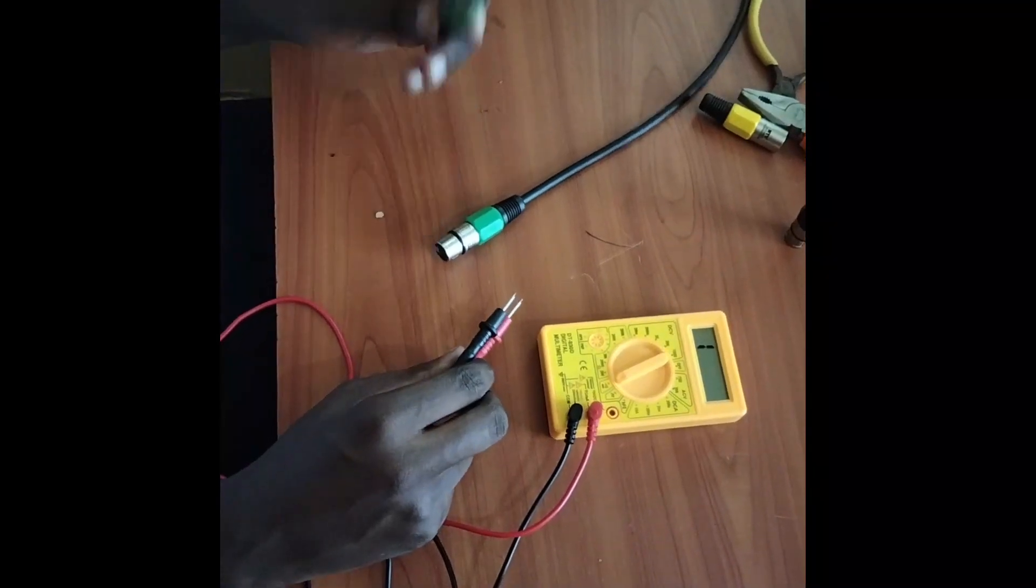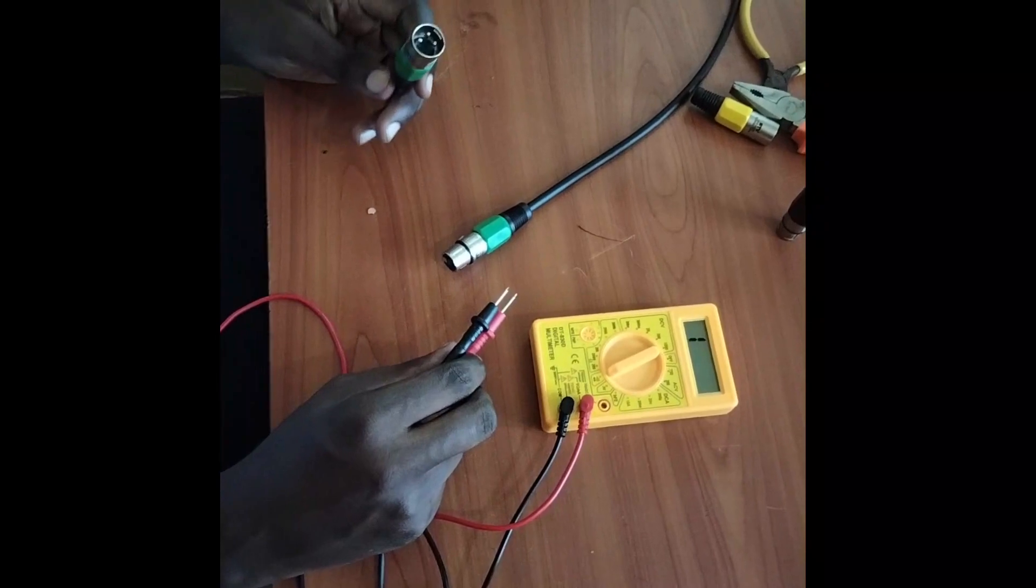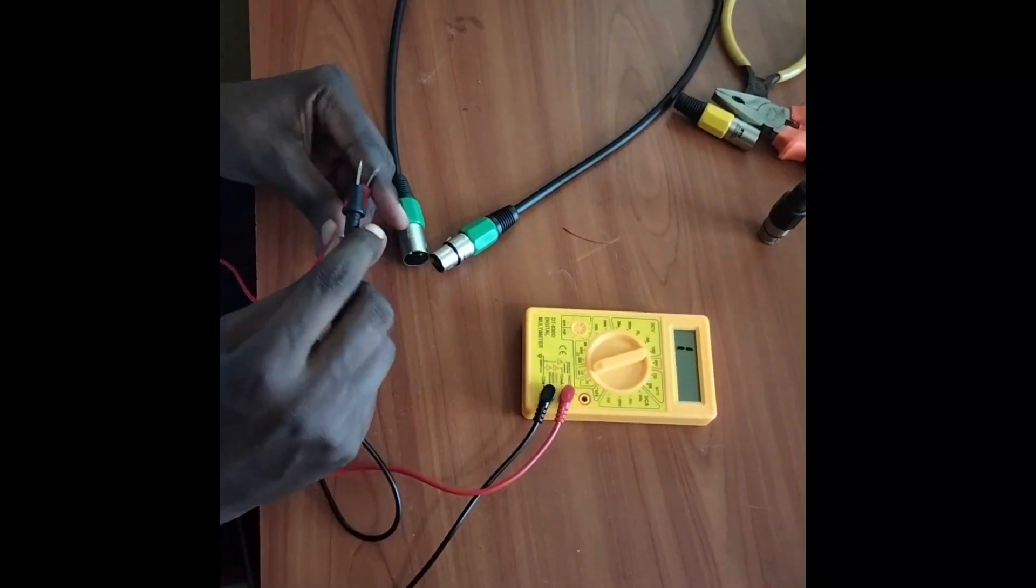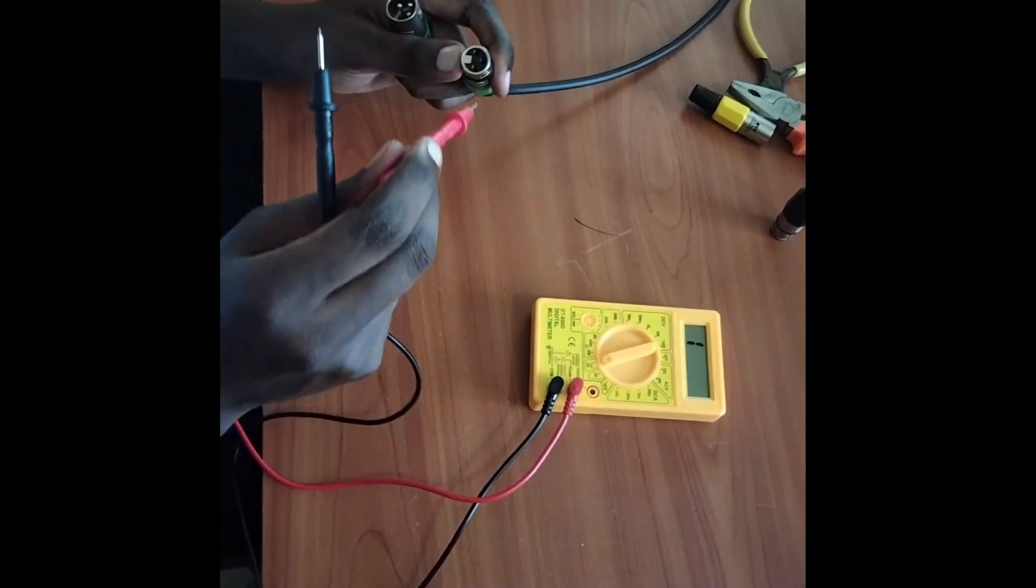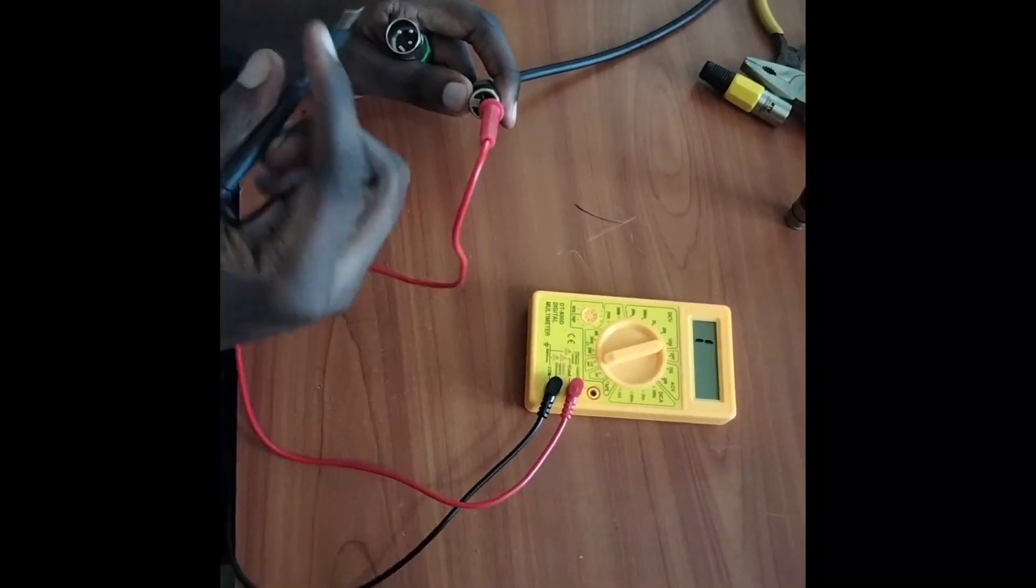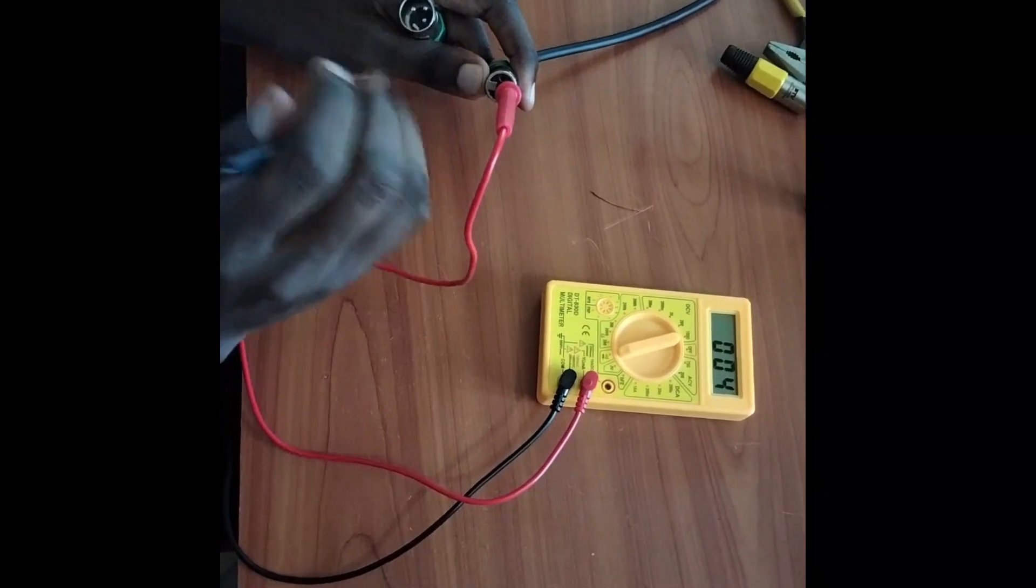We have now finished the whole soldering exercise. Now let's test for continuity to ensure that all parts of the cable work well. Let's start with 3, the top part - it works well.